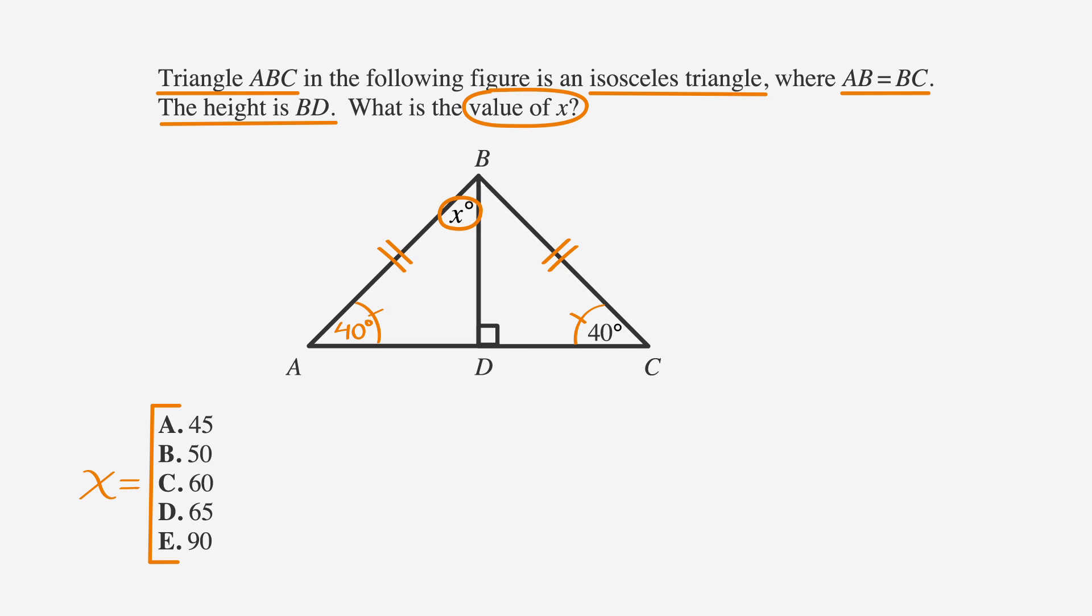To get to the next step, let's take a look at triangle ABD. Since the interior angles of all triangles must add up to 180 degrees, we can find the measure of angle X by writing the equation: 40 + X + 90 = 180.